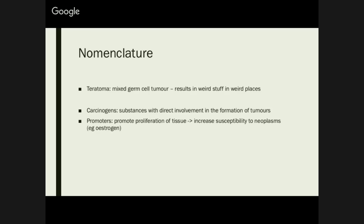Teratomas are the mixed germ cell tumours — these are the kinds of tumours that have teeth and other structures in weird places. Carcinogens are substances that result in the formation of tumours — something like smoking would be classified as a carcinogen because it has a direct involvement with the formation of tumours. Something like oestrogen, however, is considered a promoter because, while we know it leads to increased susceptibility to tumours, it essentially just promotes proliferation of tissue, giving you a higher likelihood of resulting in cancer.